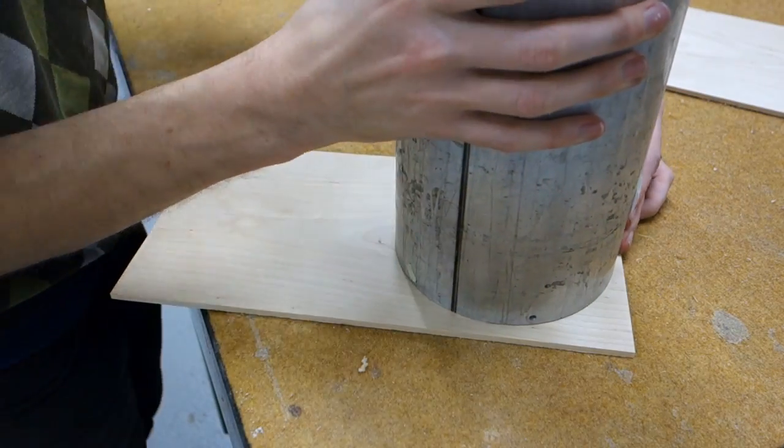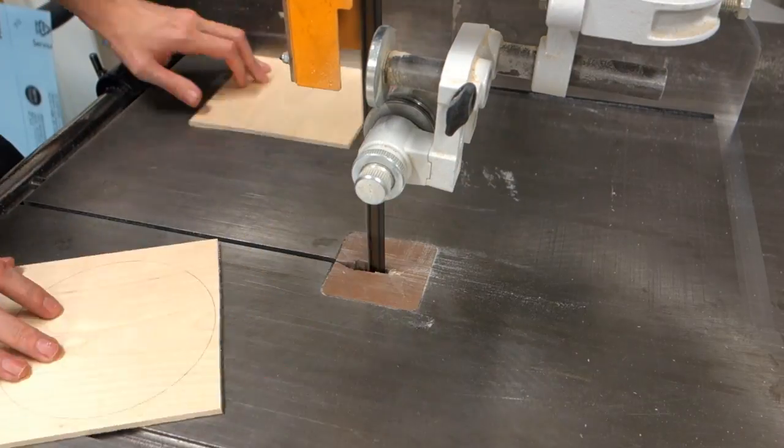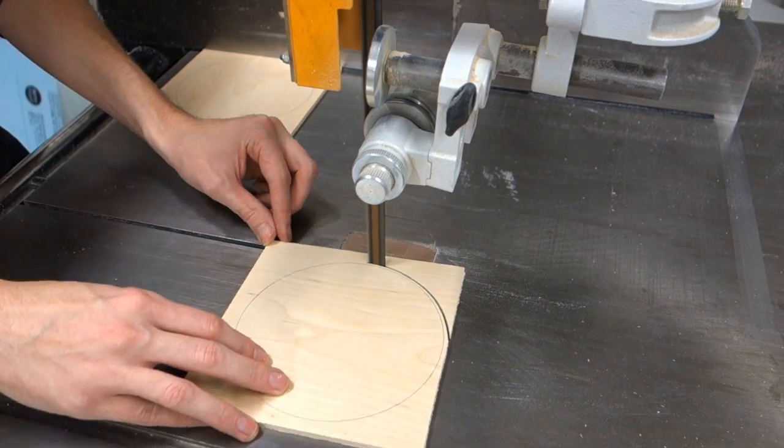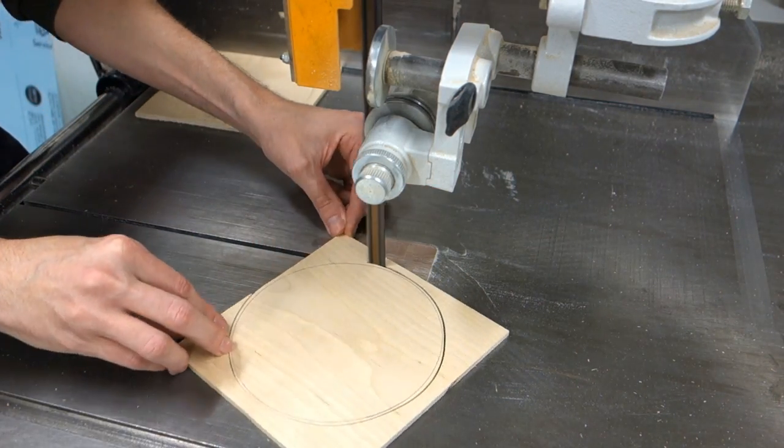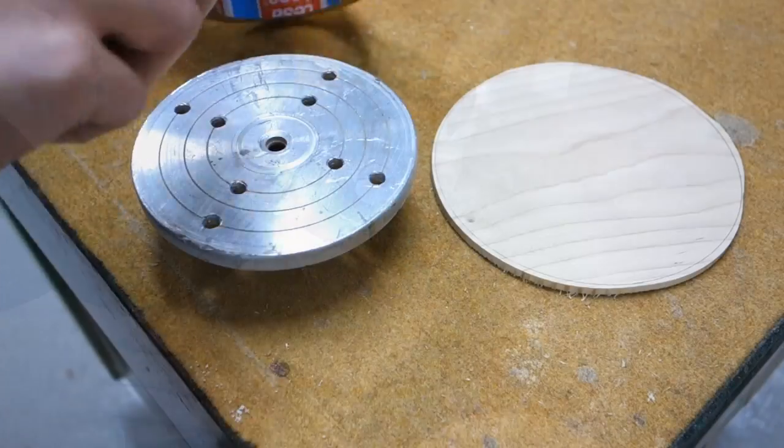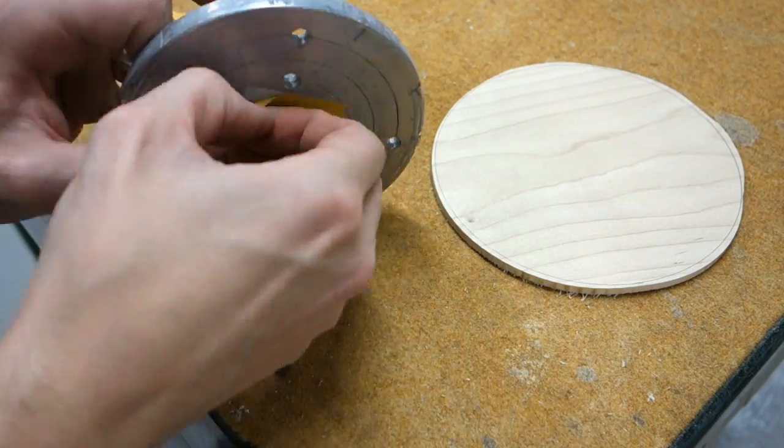Now is when you have to decide how big you want the body of your kalimba to be. Cut out a rough circle from the planed wood. Next, we head over to the lathe. You need to mount the piece of wood in a way which is meaningful in your lathe.